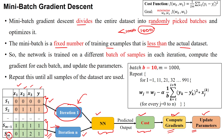For each iteration we take a batch of samples, compute the gradients for that batch, and update the parameters. We repeat this until all samples of the dataset have been passed into the network across various iterations. Here, with a dataset of 1000 samples and 10 samples per batch, the batches are: 1 to 10, 11 to 20, 21 to 30, and so on up to 991 to 1000. For each mini-batch we update the parameters of each feature.